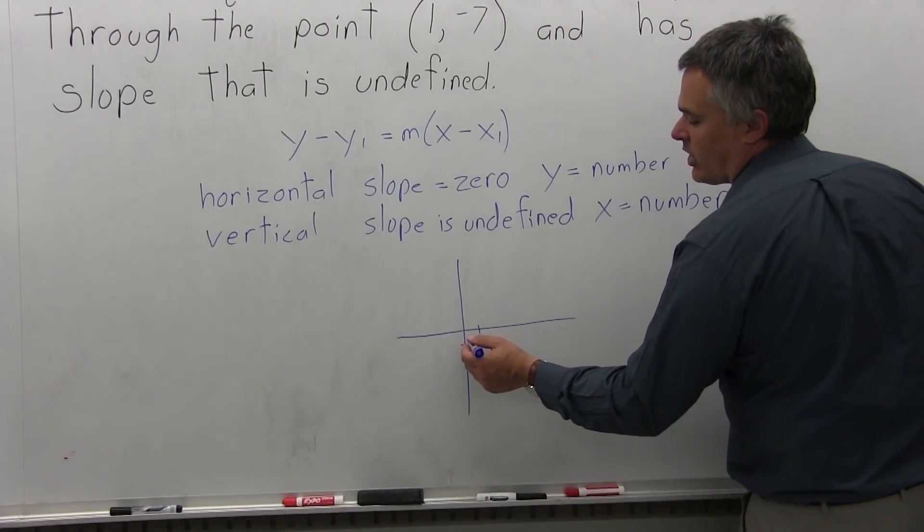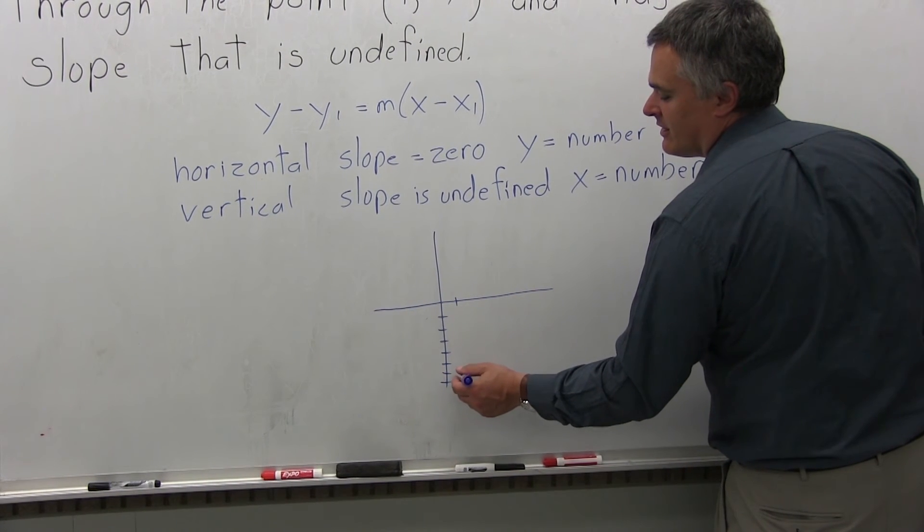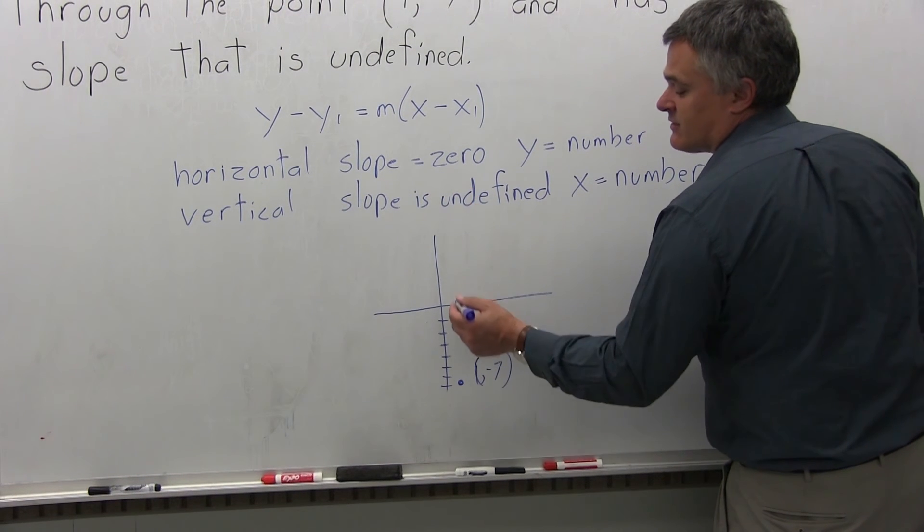If you go over 1 and down 1, 2, 3, 4, 5, 6, 7, it goes through that point, over 1 and down 7, and it's vertical.